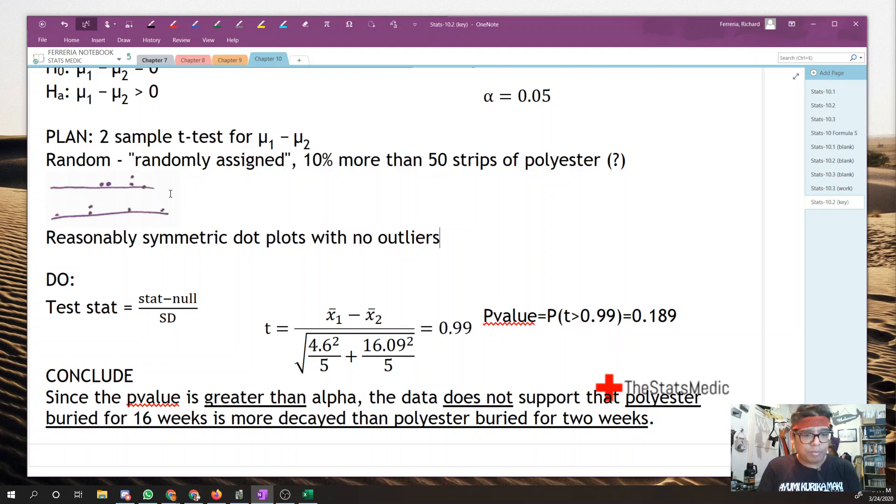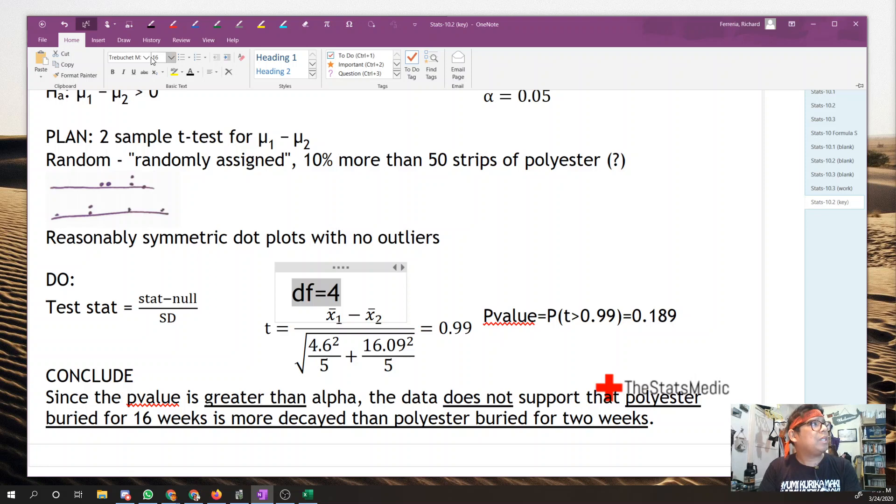Test statistic. Stat minus null over standard deviation, which is t, x bar 1 minus x bar 2 over square root of s1 squared over n1 plus s2 squared over n2. So we got 0.99, and then the p-value, the probability that T is greater than 0.99. That got us to 0.189. That's a pretty big p-value. One thing that I forgot to put here was degree of freedom. So your degree of freedom is equal to, smallest sample is 5, so our degree of freedom is equal to 4. That's what we used for our TCDF.